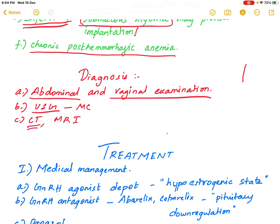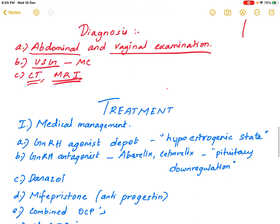CT and MRI can also be used. Additional tests include blood tests, coagulation and bleeding profiles, and endometrial biopsy or uterine curettage in cases of abnormal uterine bleeding to rule out endometrial hyperplasia or malignancy.